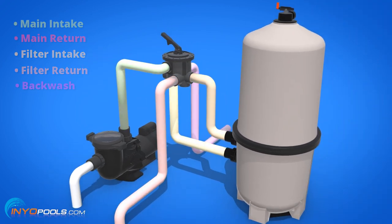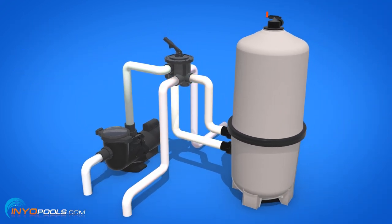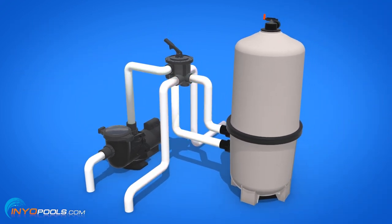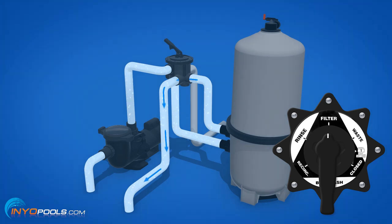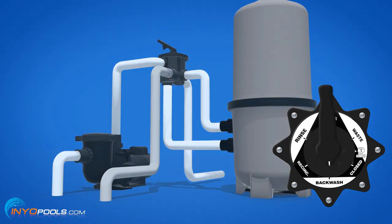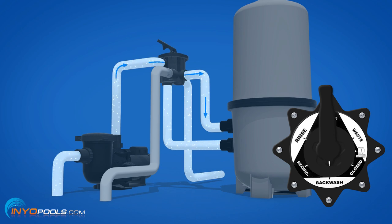Now let's take a look at how each setting affects the flow of water through the valve. The filter setting is for normal, everyday filtration — this allows water to flow from the pool, through the filtration media, and back to the pool. The backwash setting is used to clean your filter; the flow of water is reversed through the filter and discharged out the backwash port.